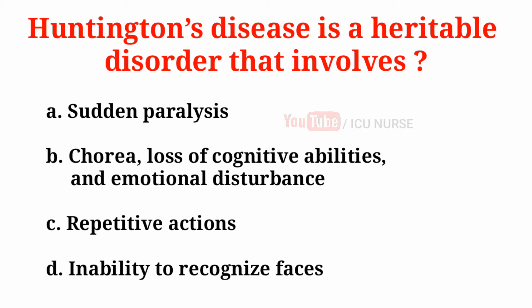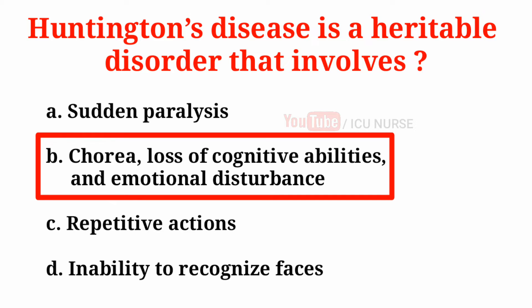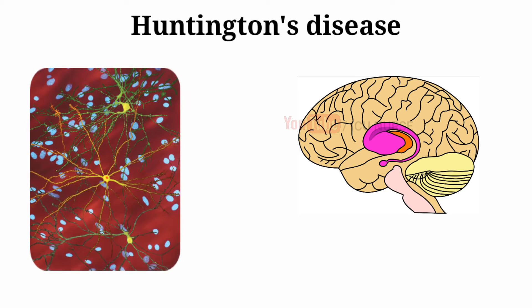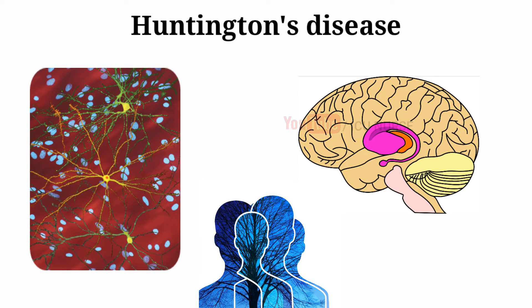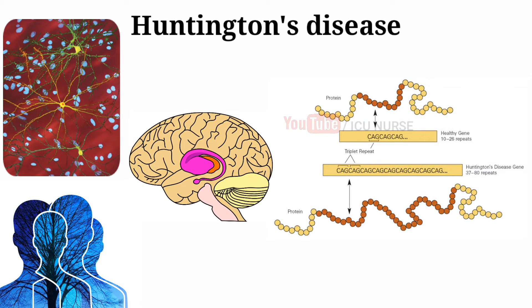Huntington's disease is a heritable disorder that involves: A. Sudden paralysis, B. Chorea, loss of cognitive abilities and emotional disturbance, C. Repetitive actions, D. Inability to recognize faces. The correct answer is B. Huntington's disease is a progressive brain disorder that causes degeneration of nerve cells deep in the brain. It affects both body and mind, is caused by a single dominant gene, and generally begins during the 3rd and 4th decades of life, though it can also affect children and adolescents.